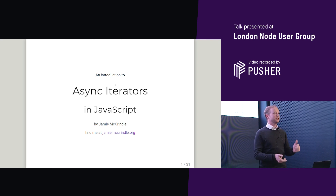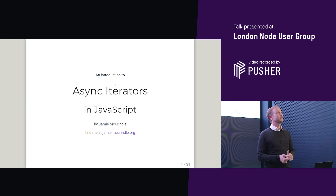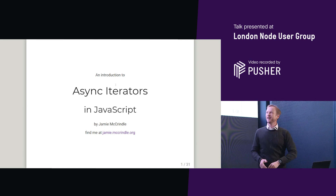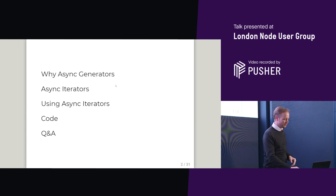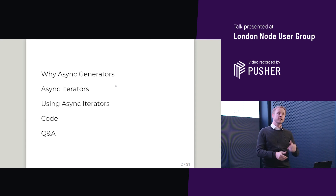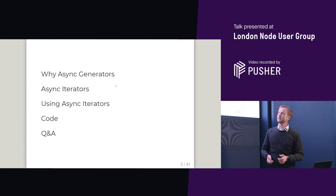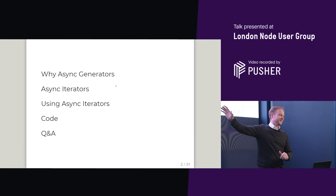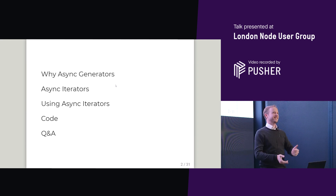Who here has used async iterators or generators in anger? So I hope it's not too boring for you. For everyone else, let me tell you a little bit about async iterators and why you'd want to use them — async generators, the underlying async iterator mechanism, and what to think about when using them. I'll show you a little bit of code and node. No Q&A, but you can ask me questions in the break.